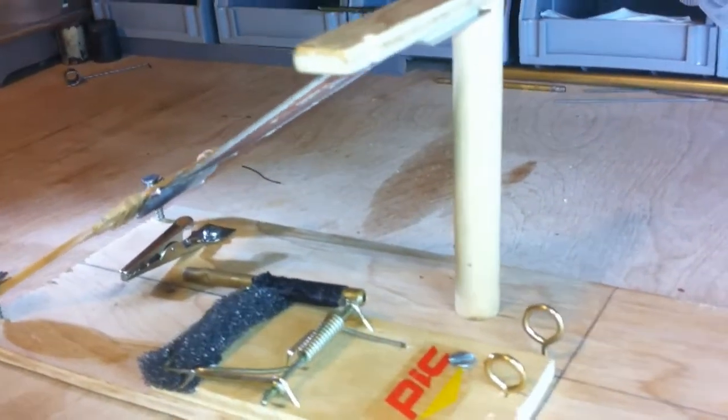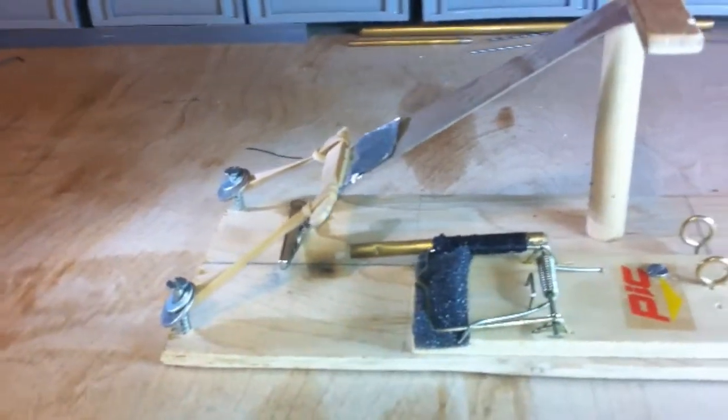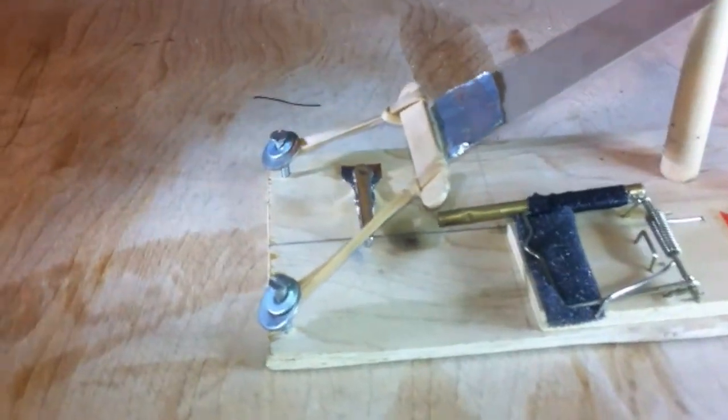I also attached to the piece of plywood a small alligator clip. This is to hold a fireworks fuse in place when I'm using the ignition system.